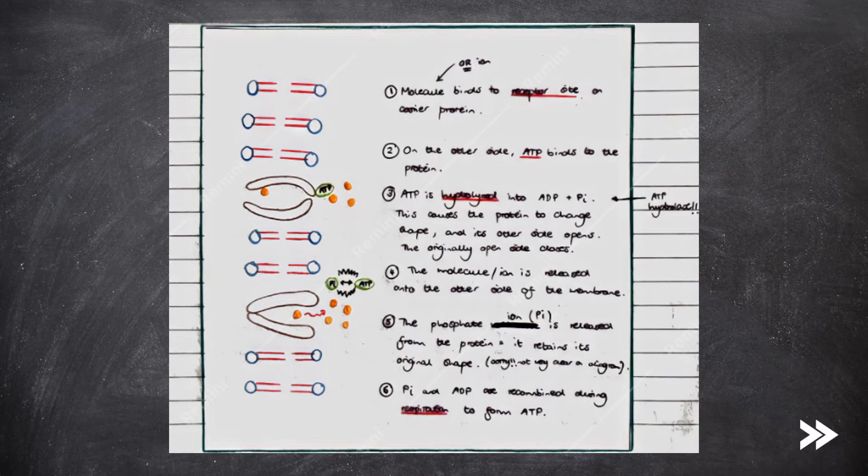So how does active transport actually work? First, a molecule or ion binds to the receptor site on a carrier protein. On the other side of the carrier protein, ATP binds to the protein. ATP is then hydrolyzed into ADP and Pi, ADP being adenosine diphosphate and Pi an inorganic phosphate ion. And this reaction is catalyzed by the enzyme ATP hydrolase.